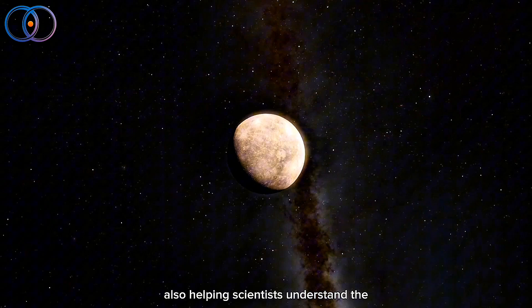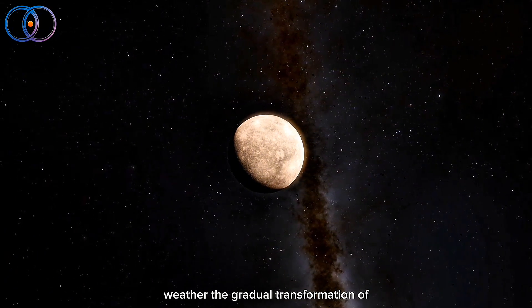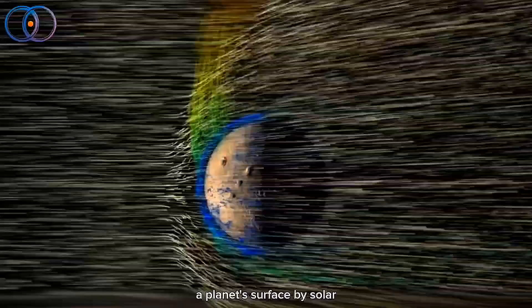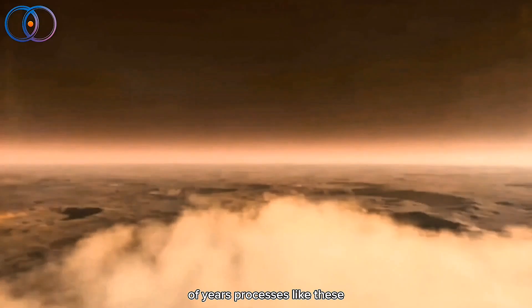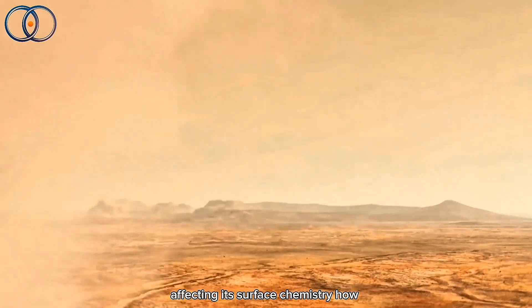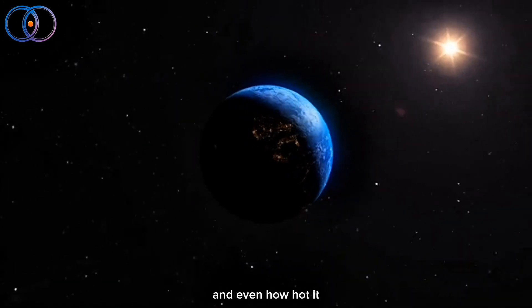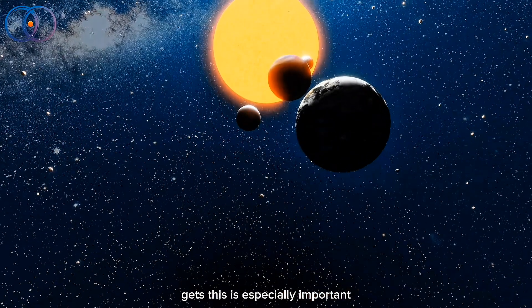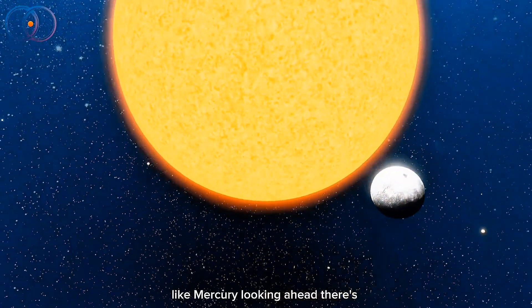This discovery is also helping scientists understand the long-term effects of space weather, the gradual transformation of a planet's surface by solar and cosmic forces. Over millions of years, processes like these can reshape a planet's crust, affecting its surface chemistry, how reflective or dark it becomes, and even how hot it gets. This is especially important when it comes to studying planets in extreme environments, like Mercury.